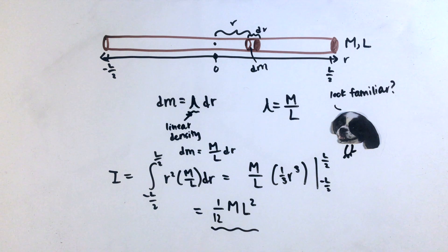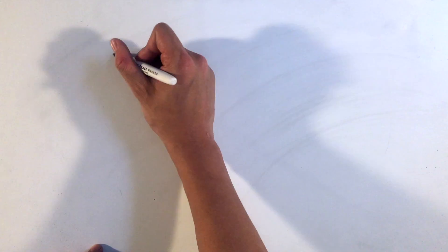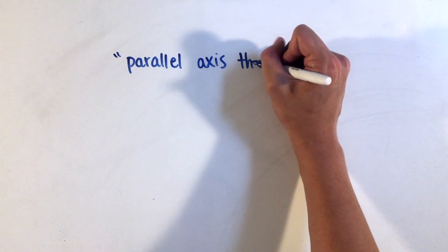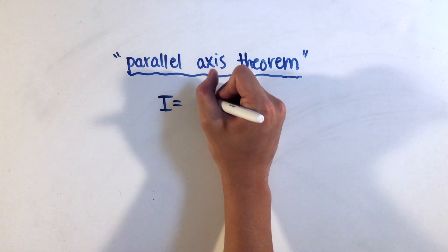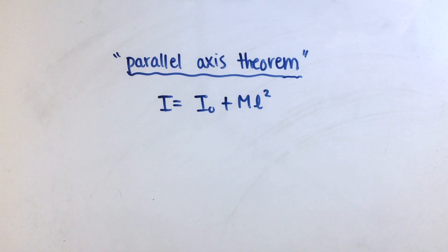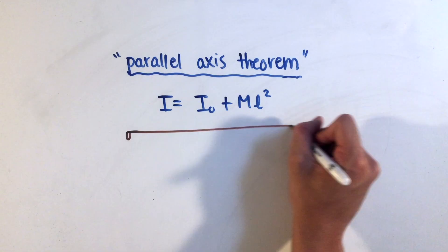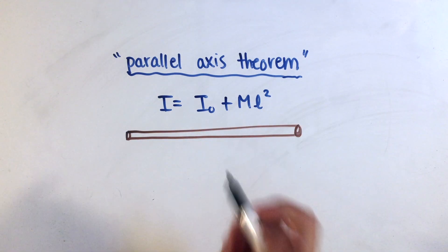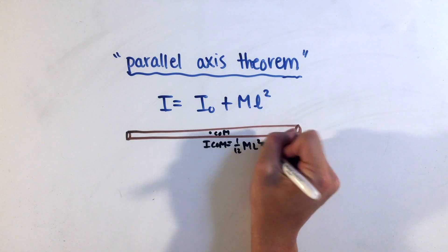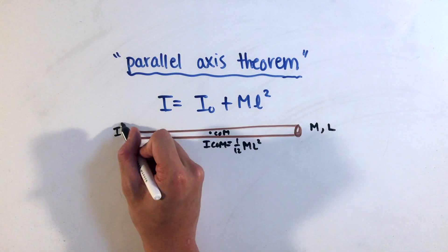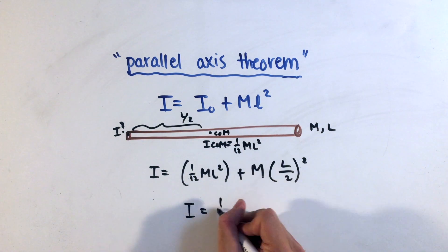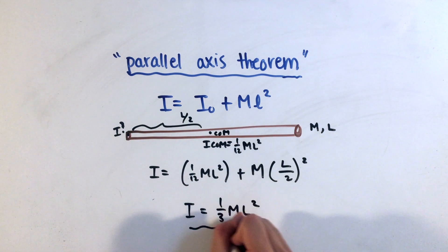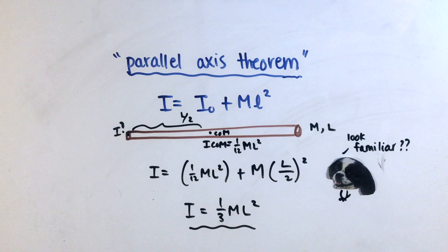One other amazing equation related to moment of inertia is known as the parallel axis theorem, which relates the moment of inertia about the center of mass of an object to the moment of inertia of this same object about anywhere else in space. Applying this equation to our rod to calculate the moment of inertia about the end of the rod, we once again arrive at a very familiar result from AP Physics 1.